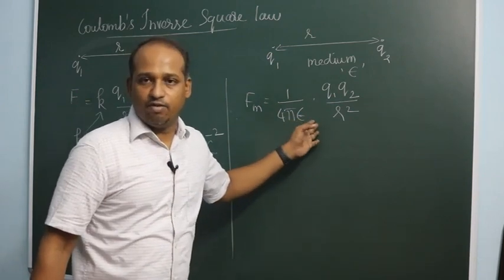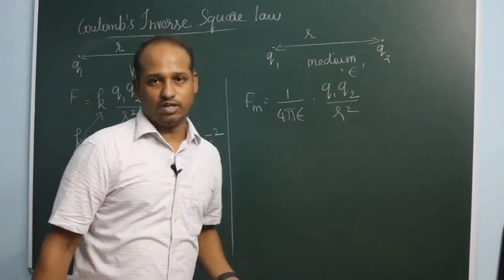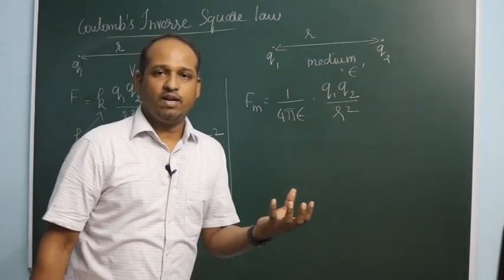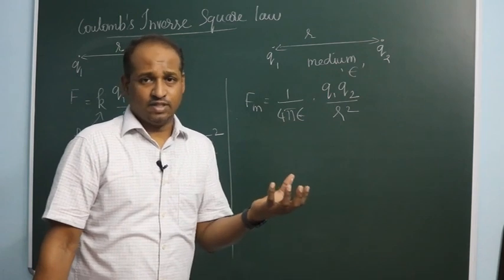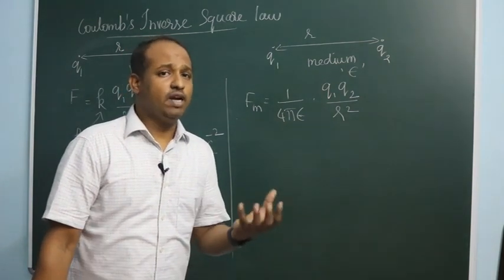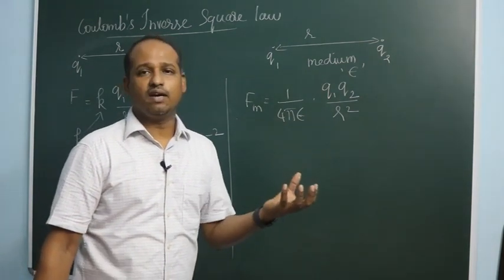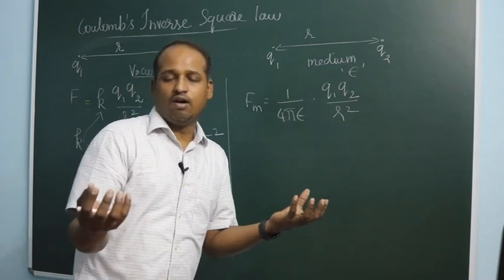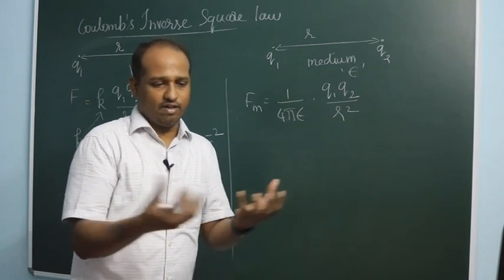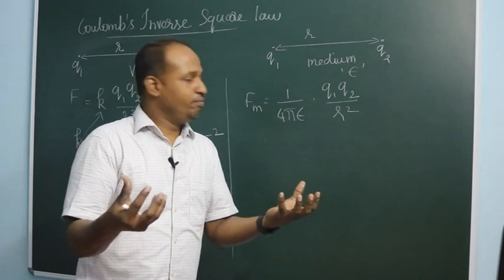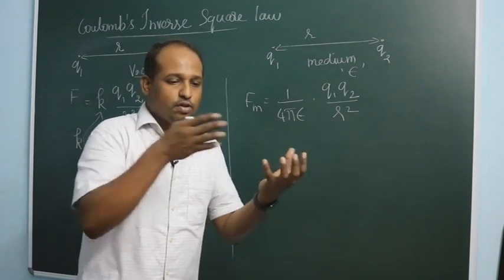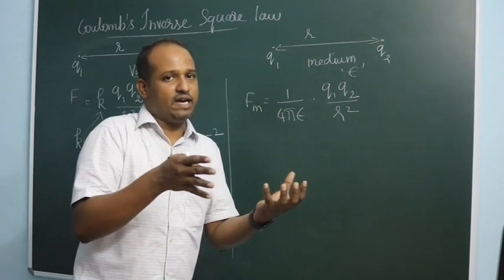This will explain why salt dissolves in water. So salt, which is primarily made up of - our table salt - sodium and chlorine. So the sodium plus ions will be holding or attracting chlorine negative ions. So they are mutually attracting each other.